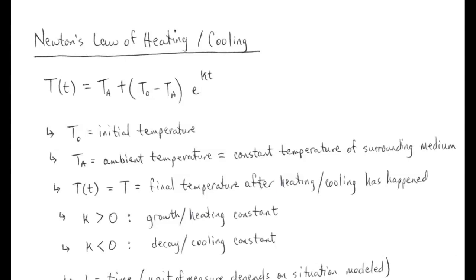As you can see, this is the basic equation we have. Notice that it has a term with an exponential function in it, which is why it's part of this application. This general equation governs, in a crude way, what happens whenever something is being heated or cooled by its environment. We're going to unpack what all of these terms mean, and then do several examples to understand how to use this equation to solve problems.